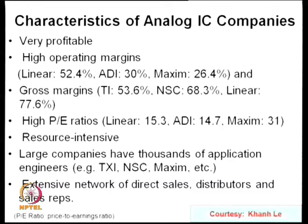Key issues for the wireless and analog IC market include whether the semiconductor market downturn will pull analog down with it, whether analog ICs will remain viable or be displaced by all-digital, and whether the market is becoming increasingly application-specific. Analog IC companies need large operating margins — Linear has 52 percent, Analog Devices 30 percent, Maxim 26 percent — and the price-to-earnings ratio is critical.